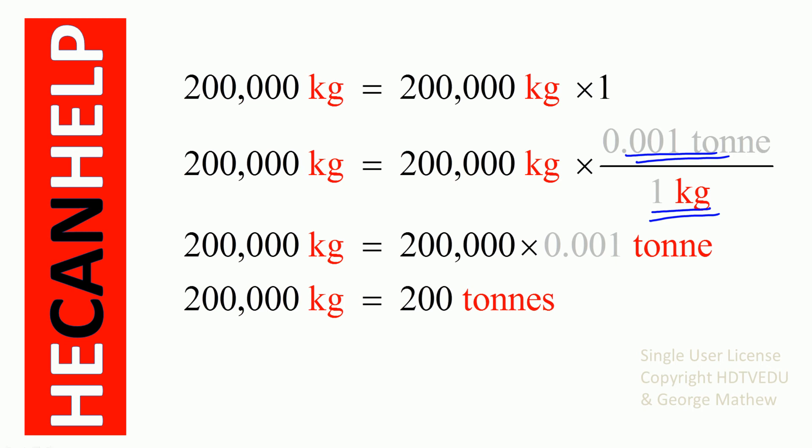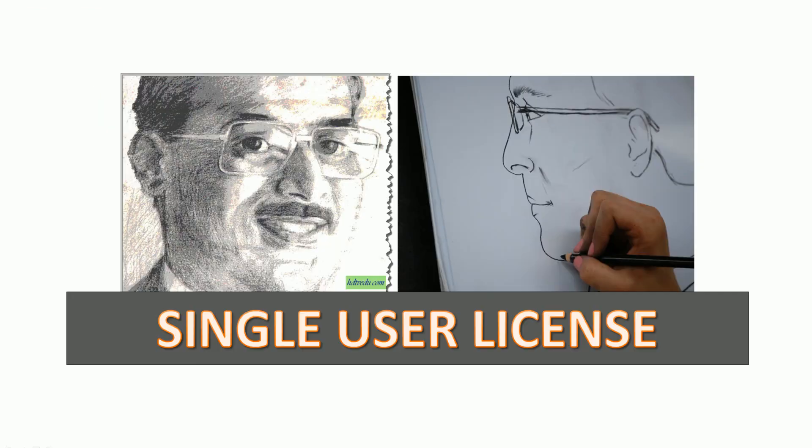When we do the multiplication, we get 200 tons. So 200,000 kg is 200 tons. This is George Matthew signing off — good luck!